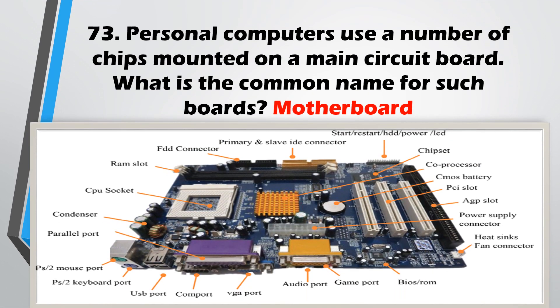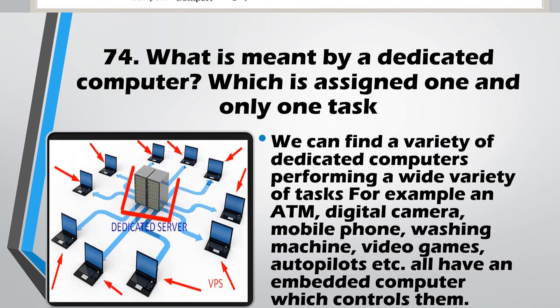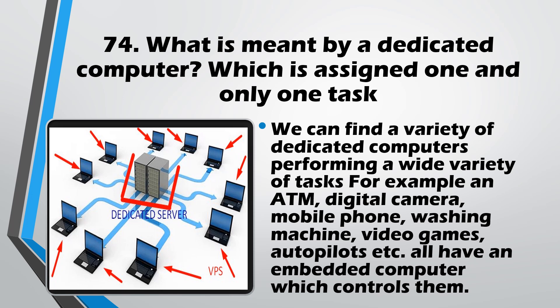Question No. 73: Personal computers use a number of chips mounted on a main circuit board. The common name for such a board is a Motherboard. All chips and devices are connected through the motherboard. Question No. 74 relates to dedicated computers — for example, ATM machines, digital cameras, and mobile phones perform one task at a time and are dedicated computers.